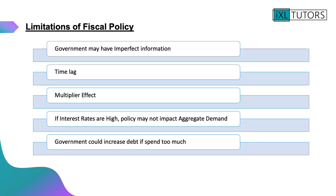Finally, there are some limitations of fiscal policy. One of the main ones is that the government may have imperfect information, which limits whether the fiscal policy is effective. The second is time lag — it takes time to implement and for it to be filtered through into the economy. The third limitation is the multiplier effect: if we're thinking about government spending, it's not just the initial injection that has an effect but also a longer-term increase in economic growth.